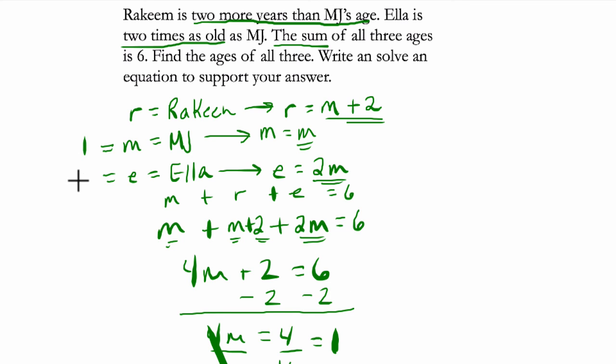Ella is twice that. Two times one is just two. And Rakim is two more than that. Well, one plus two is just three. And those are their ages.